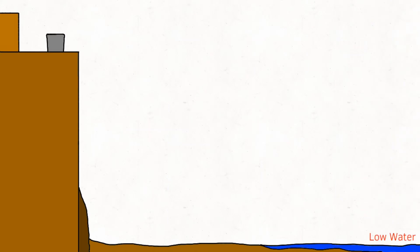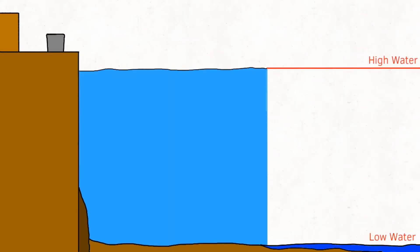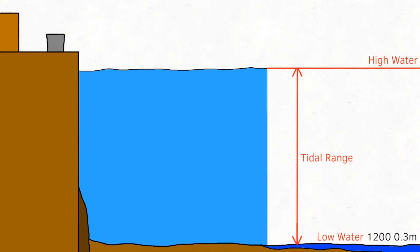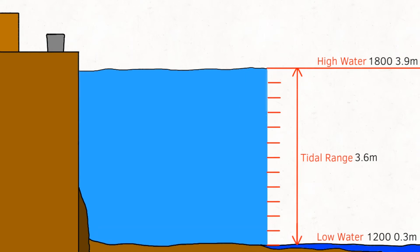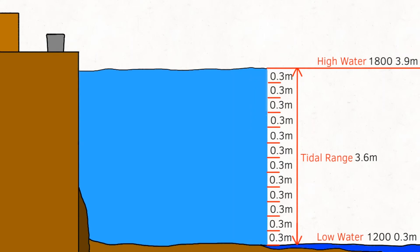But what if we wanted to work out tidal height at a time in between high and low water? Our first step is to work out what the tidal range is. For this example, low water is at 12 o'clock at 0.3 meters deep, and high water is going to be at 6 o'clock at 3.9 meters deep, giving us a tidal range of 3.6 meters. I'm going to work out the tidal height for 5pm. The first stage is to divide our tidal range by 12, which gives us 0.3 meters for each twelfth.